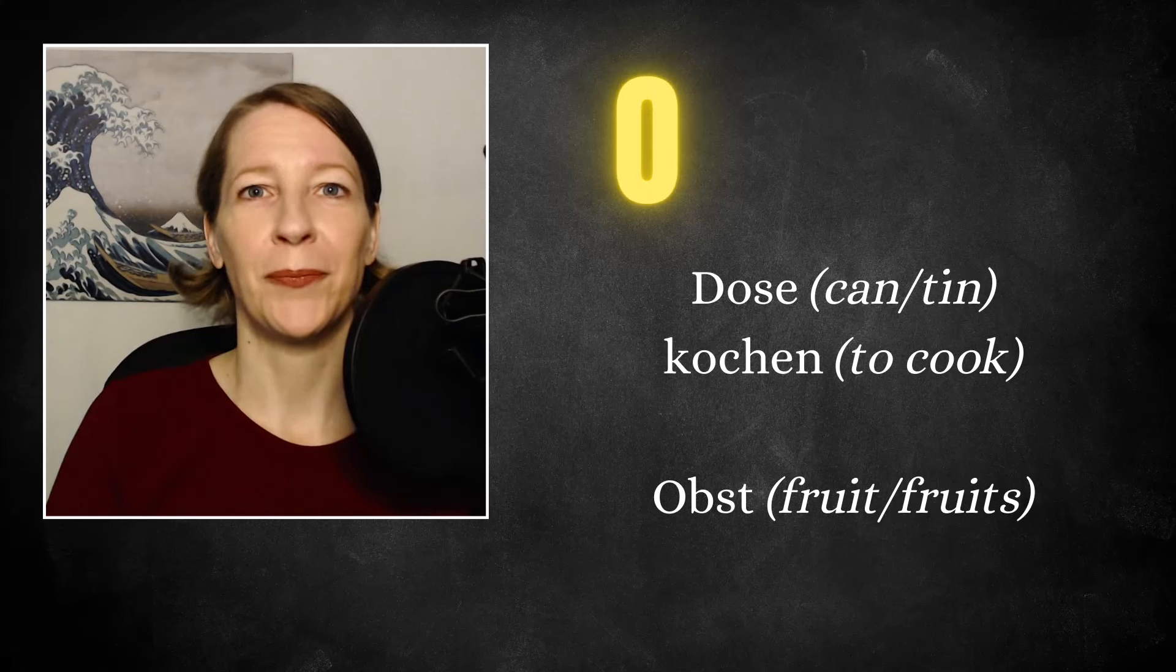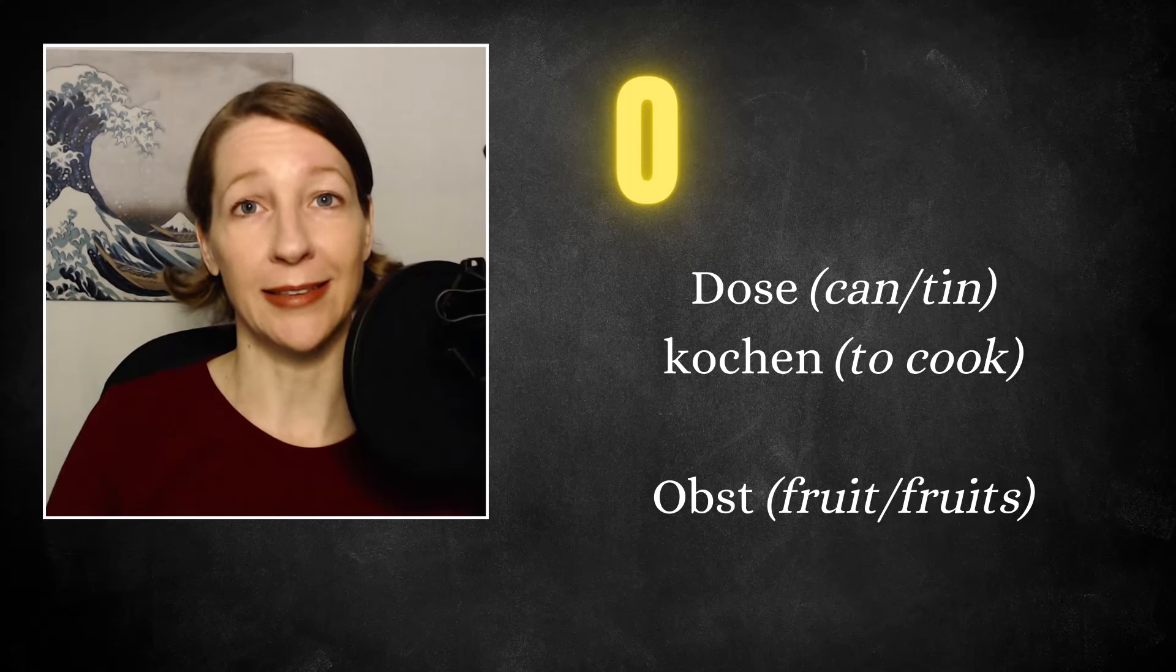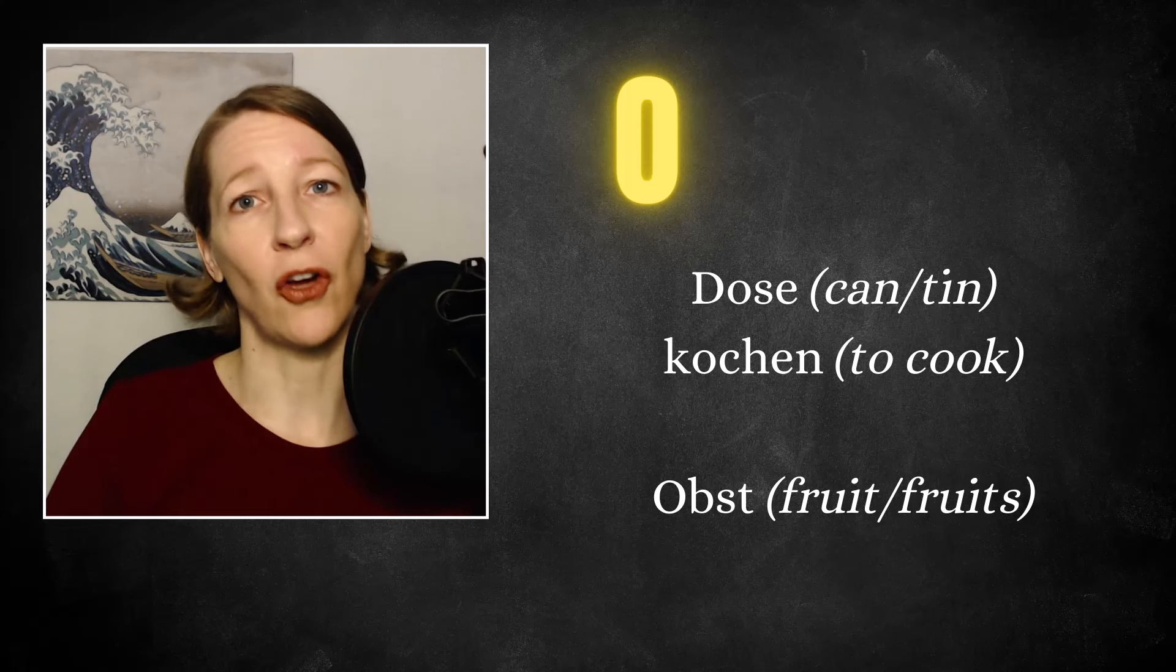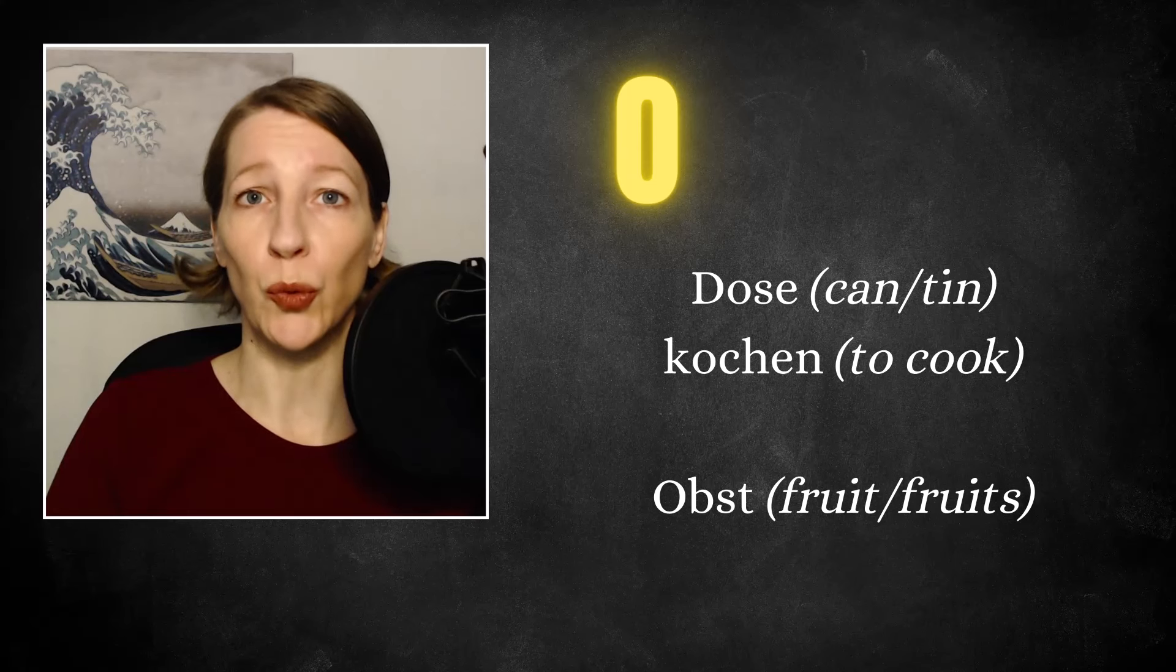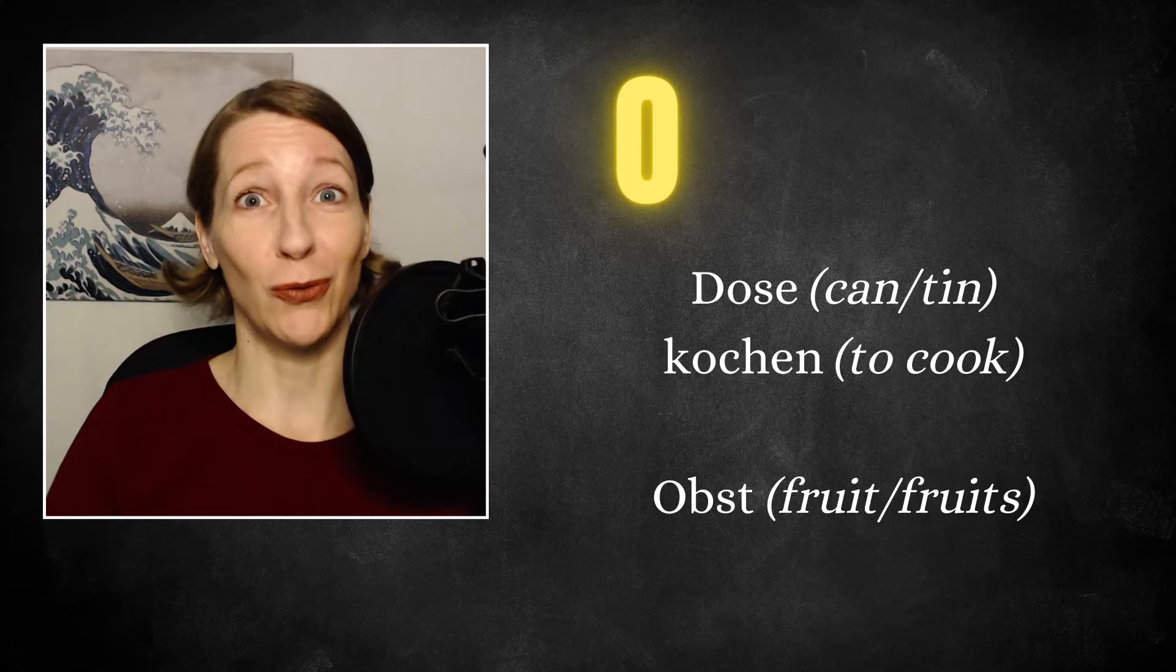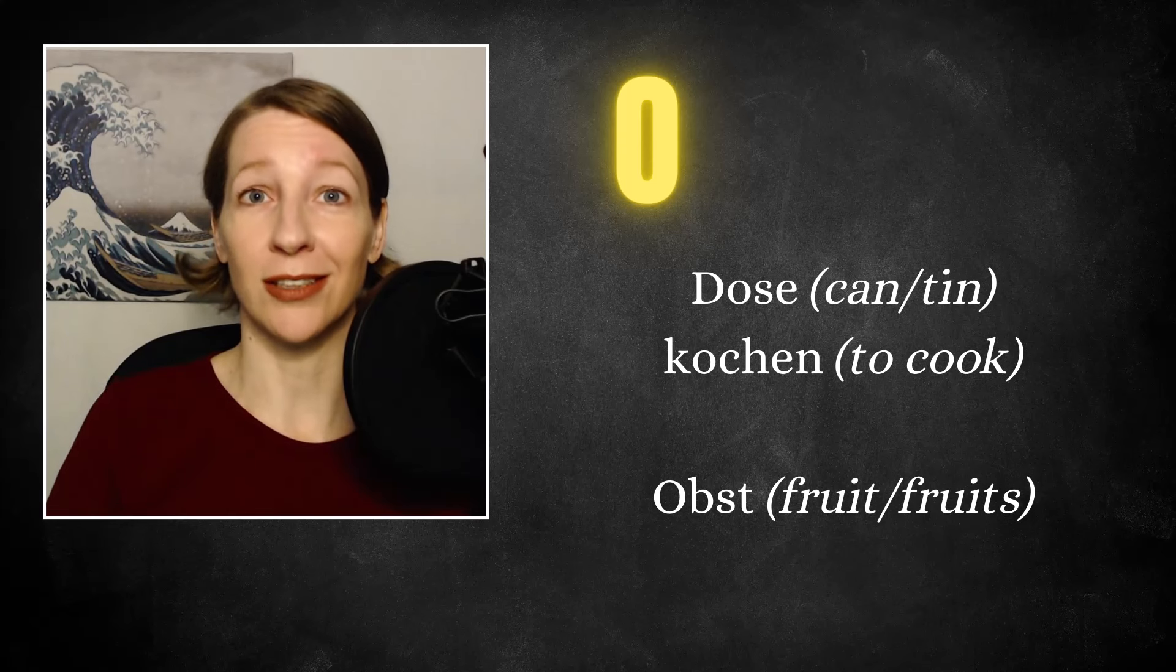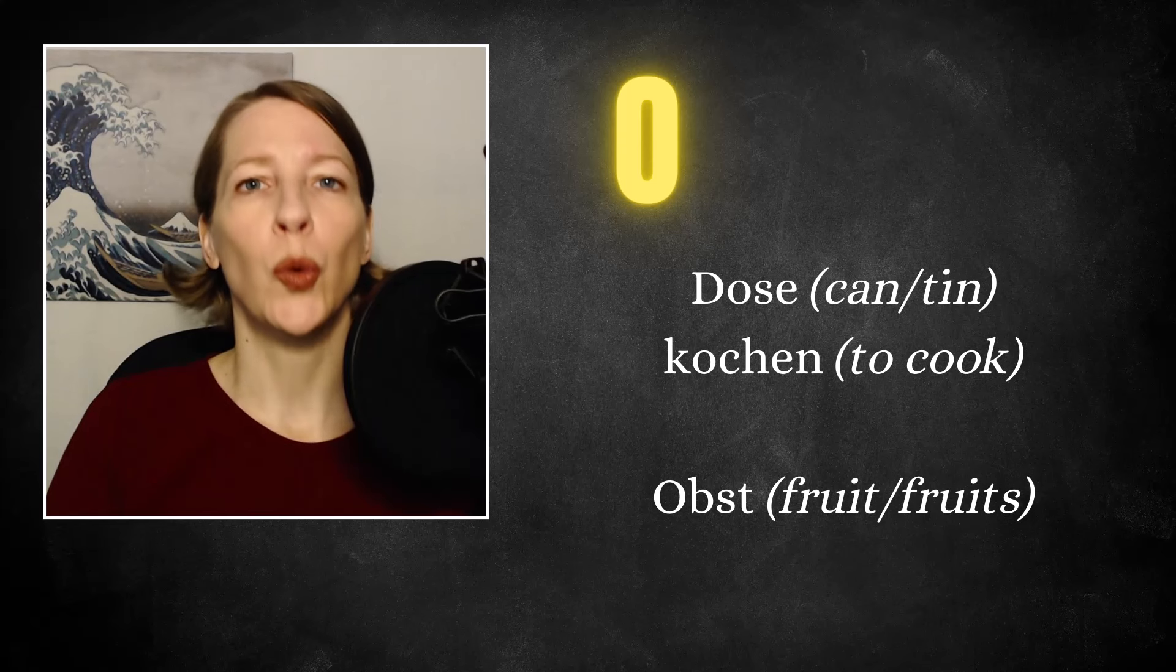O. Dose. Kochen. Here you can see that pattern again. If it's followed by a consonant and then a vowel, it's long and closed. Otherwise, it's more short and open. But not all words follow those rules, so sometimes they have an exception like the word Obst. Here you can see it's followed by consonants only and we still say O. Obst.